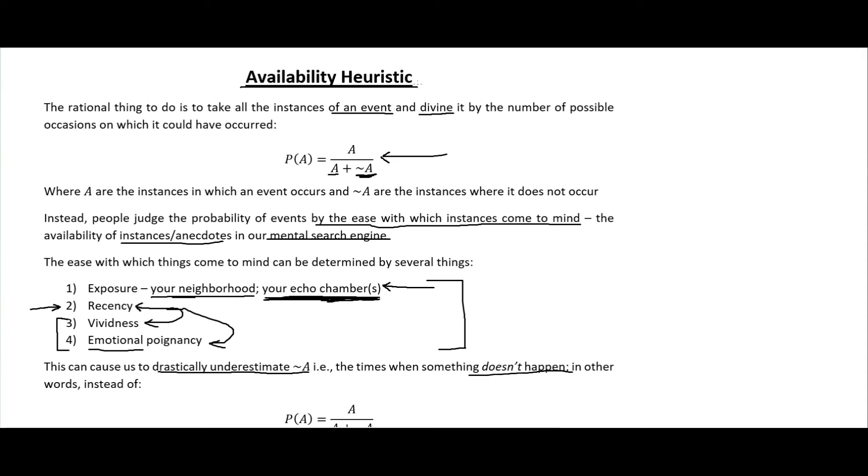At least on reflection, try to keep in mind that you will fall victim to this availability heuristic. Even if in your snap judgments in the moment you do succumb to the availability heuristic, at least every once in a while try to reflect on your thoughts and think, am I succumbing to this availability heuristic?